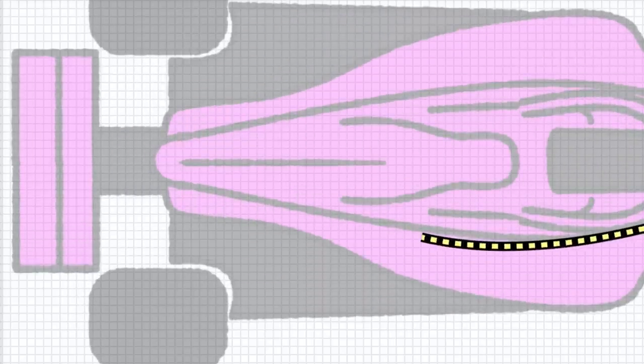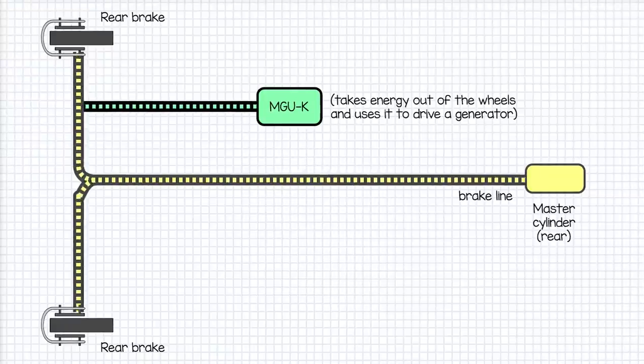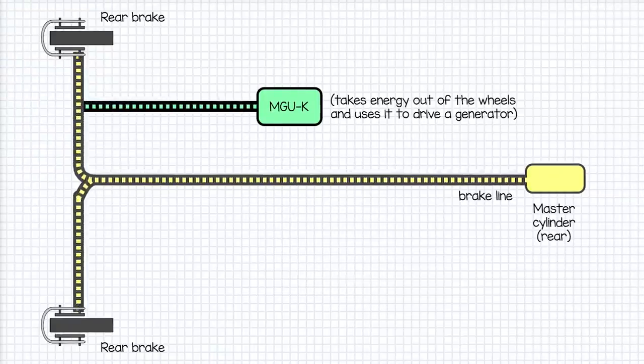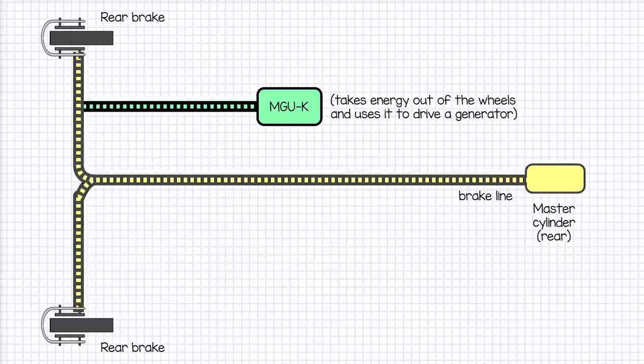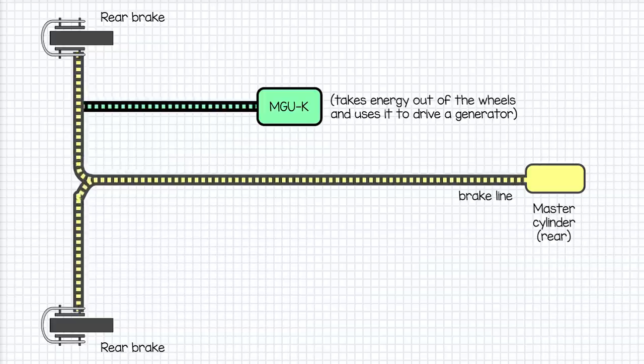The rear end is more complicated. Since the hybrid power unit was introduced, the MGU-K is a significant part of the system that slows down the rear wheels. This duty is now shared between the brakes and the MGU-K. To manage this effectively, the rear brakes are not operated by a simple hydraulic system but by brake by wire.